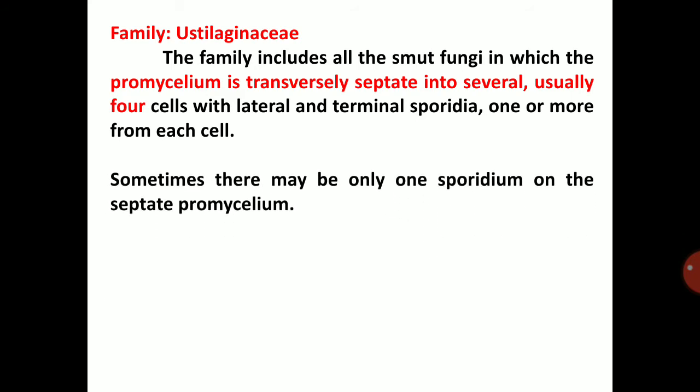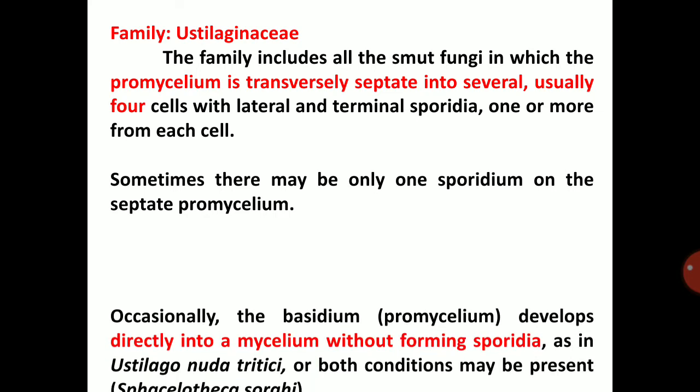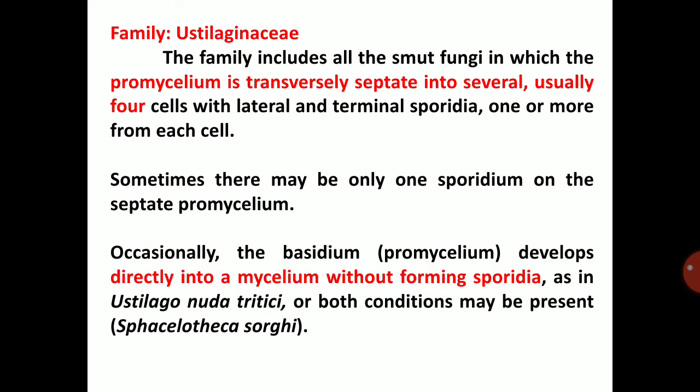Sometimes there may be only one sporidium on the septate promycelium. Occasionally, the basidium — that is, promycelium — develops directly into a mycelium without forming sporidia. On the septate promycelium, mycelium develops directly without forming sporidia, as in Ustilago. Both conditions may be present in Sphacelotheca sorghi — that is, Ustilago directly, or mycelium direct without sporidia formation.